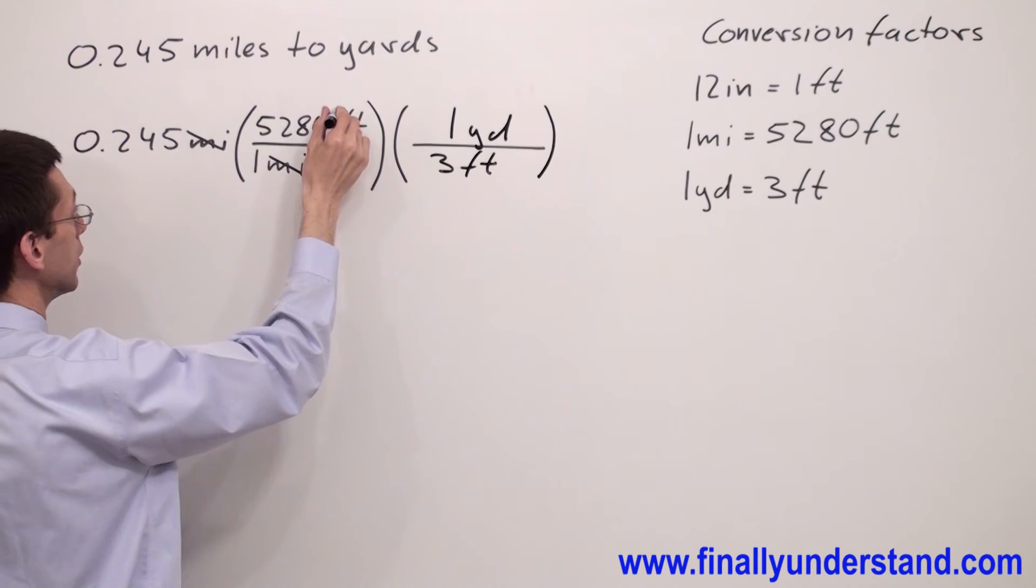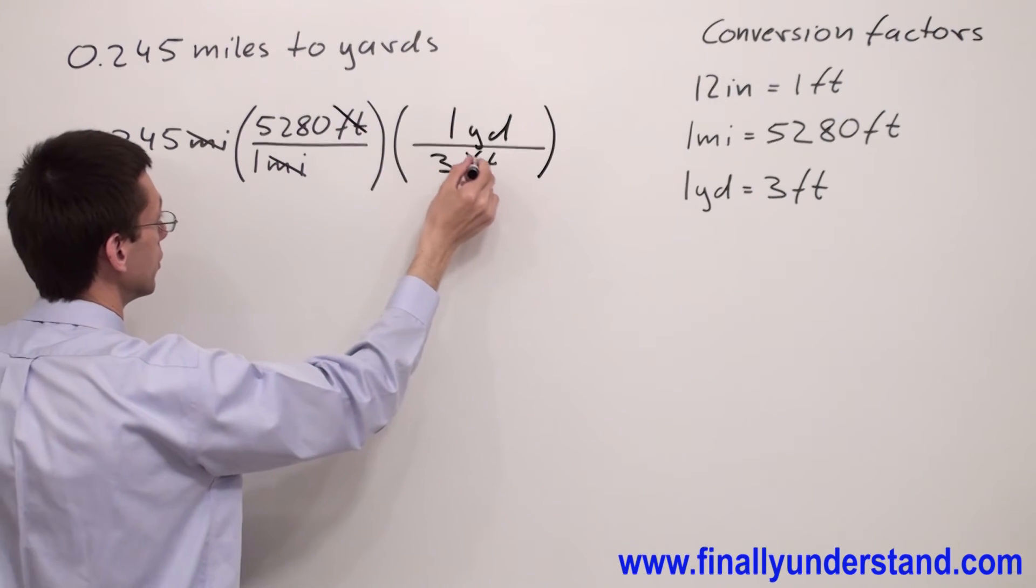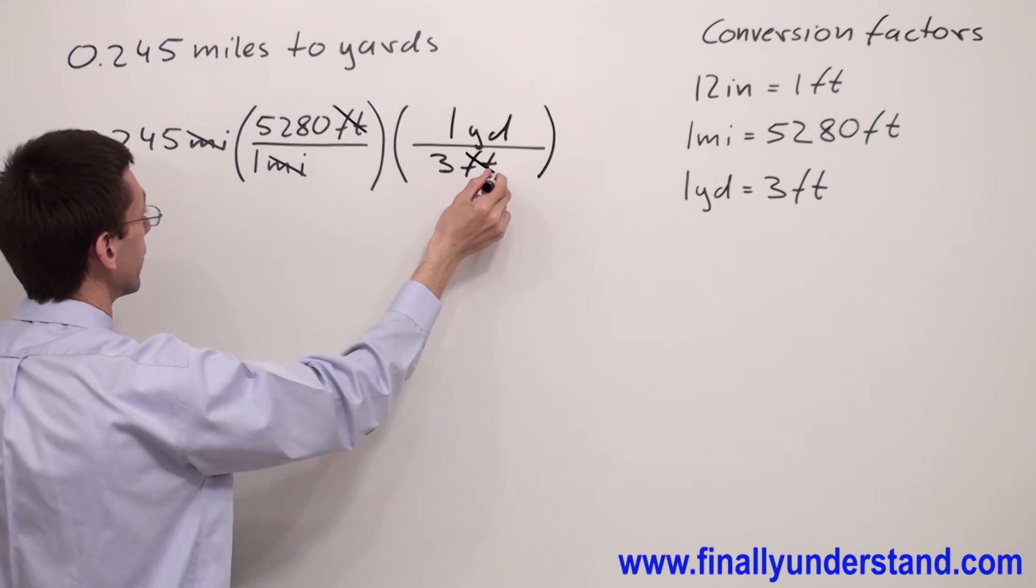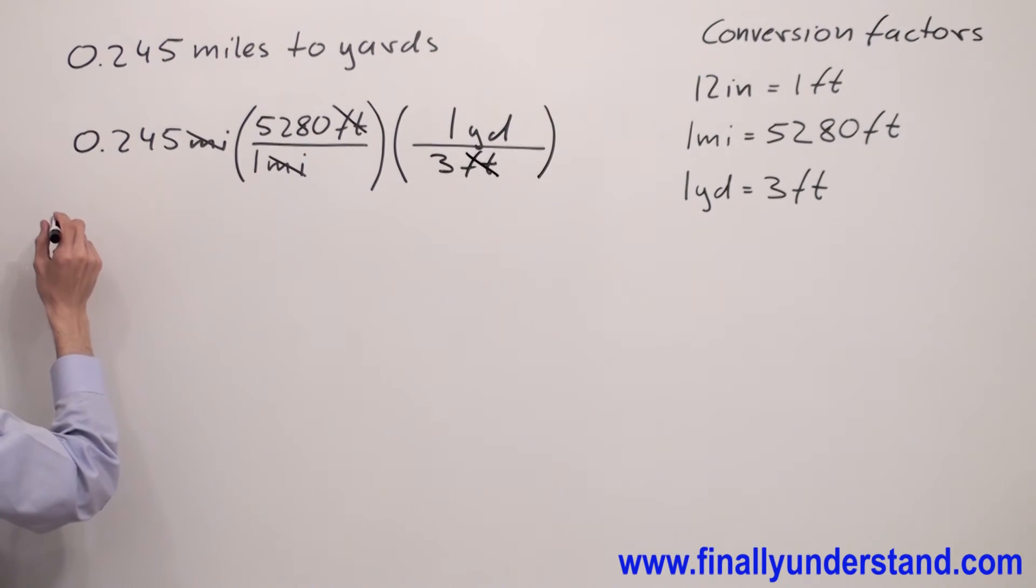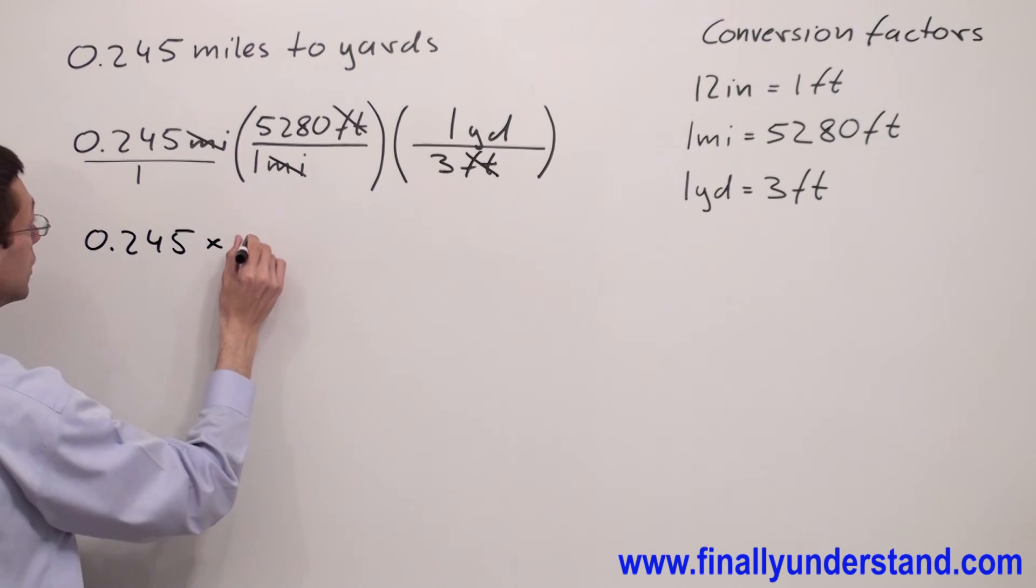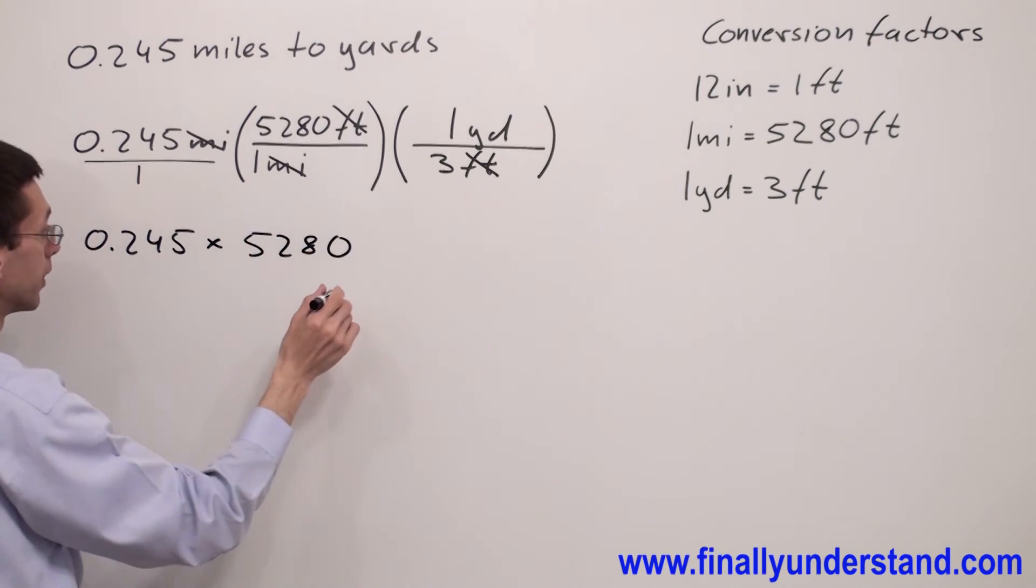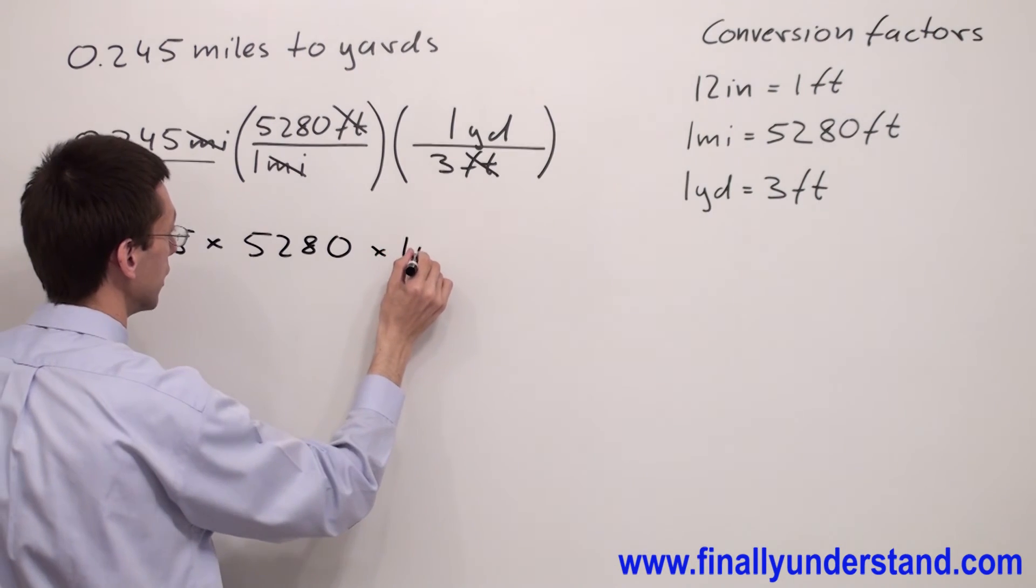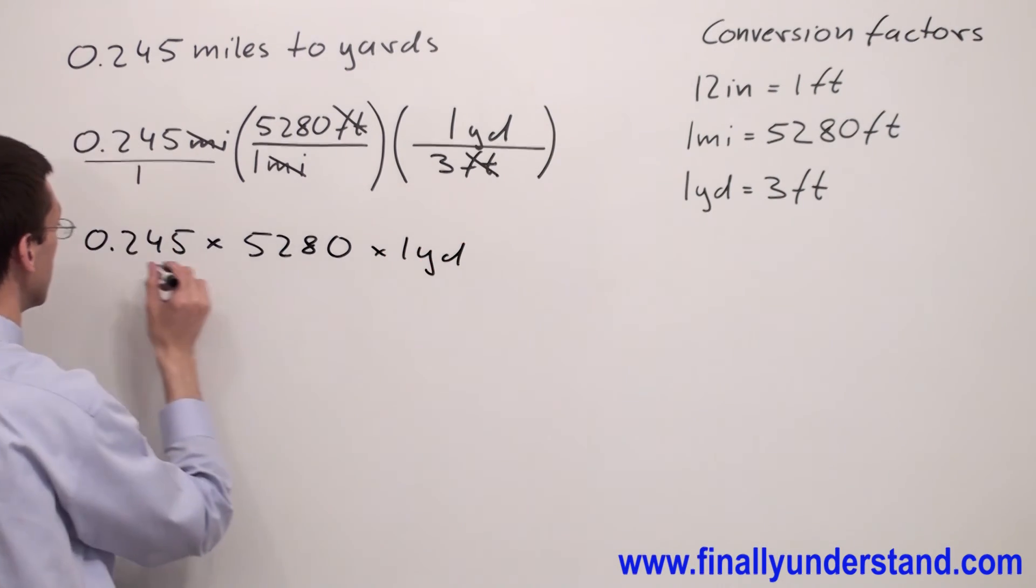So take a look what will happen. Foot and foot will cancel out, and I'm going to end up with simply three fractions. Anytime you multiply fractions, we have to multiply numerator by numerators and denominators by denominators. So I'm going to have 0.245 times 5,280 times one yard over three.